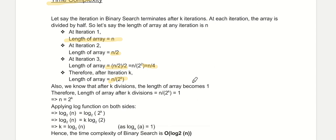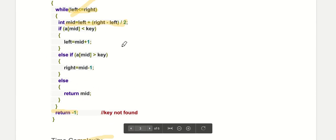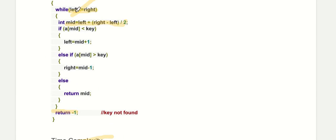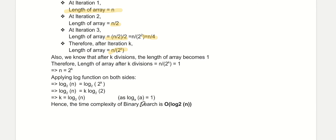After k iterations, the length of the array will be n divided by 2 to the power k. In the worst case, after k iterations the length becomes 1, so n divided by 2^k equals 1, meaning n equals 2^k. Applying log on both sides, we get k equals log base 2 of n. Since each iteration takes constant time, the time complexity of binary search is O(log base 2 of n).